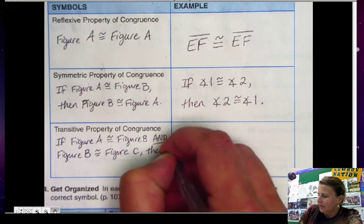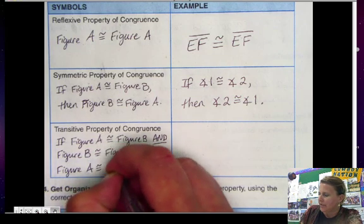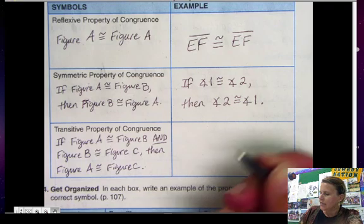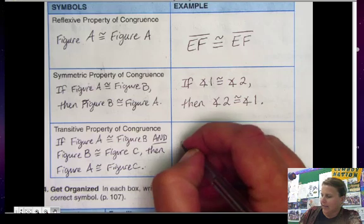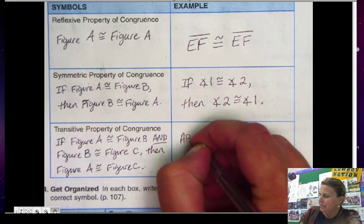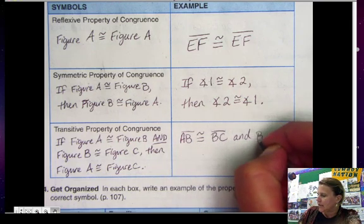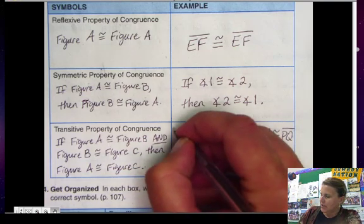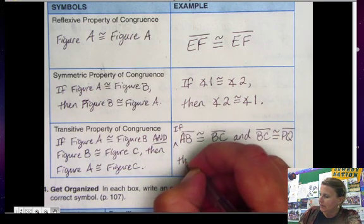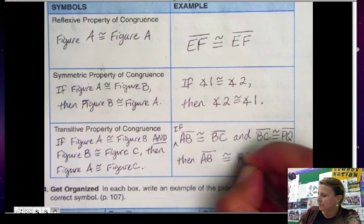So if we were to think about this maybe going back to segments again, we could say that AB is congruent to BC, and BC is congruent to PQ. So this, I should have said if. Then the first one, AB, is congruent to the last one, PQ.